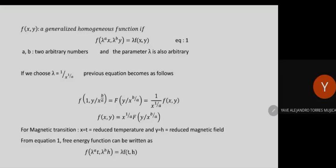This scaled magnetization can give a data collapse for all values of temperature close to T_c — both T greater than T_c and T less than T_c — as long as the reduced temperature and reduced field are not very large. It just looks like a hysteresis plot: for different values of T you get different hysteresis curves, but when you plot scaled magnetization versus scaled magnetic field, all the hysteresis curves collapse on top of each other.